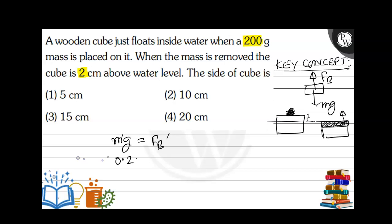So m-dash is 0.2 kg (200 grams). Let the side of the cube be L. Then the extra volume submerged is L × L × 2 cm, which in SI is L² × 0.02 m. The buoyant force equals this volume times the density of water (1000 kg/m³) times g. You can also keep everything in CGS — density of water would then be 1 g/cm³.